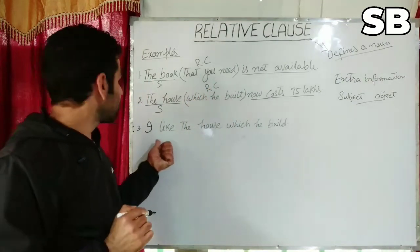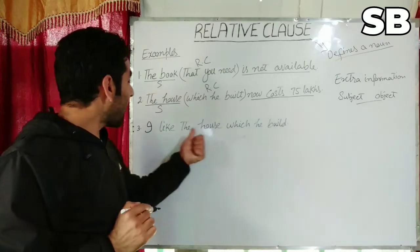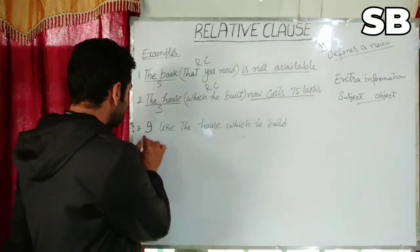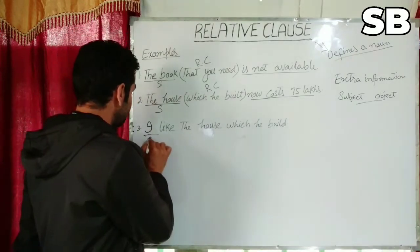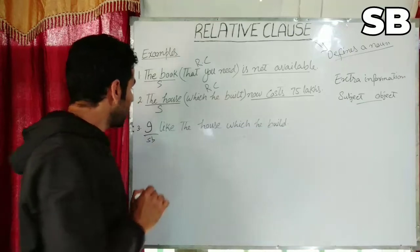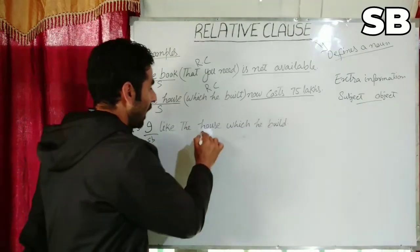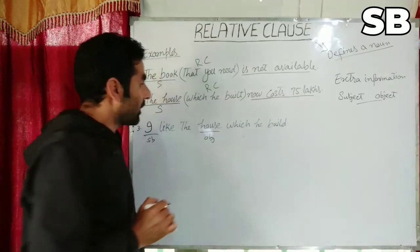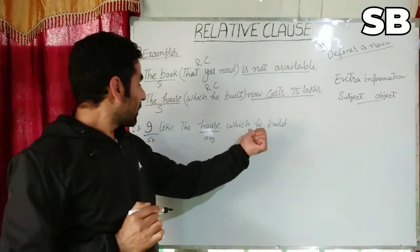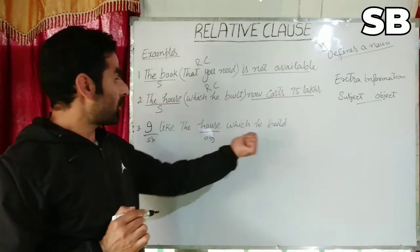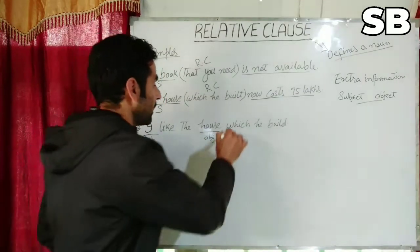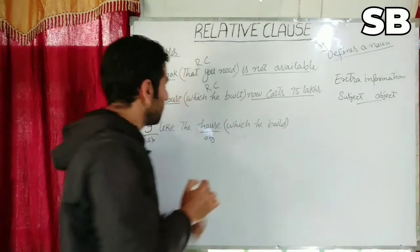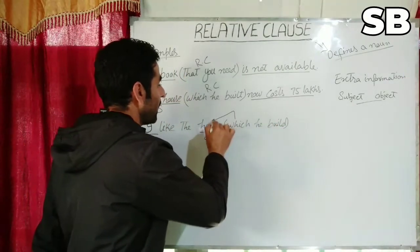The third sentence: 'I like the house which he built.' Here 'I' is the subject and 'house' is the object. The extra information is 'which he built' — that is the extra information about the house.